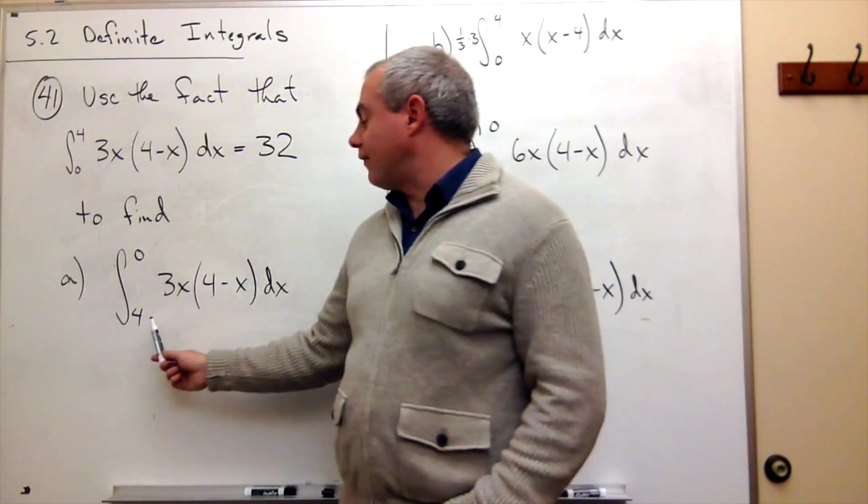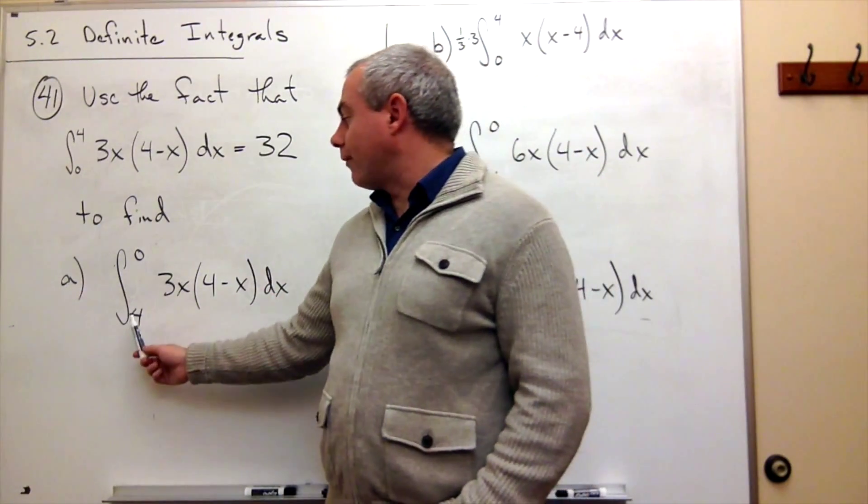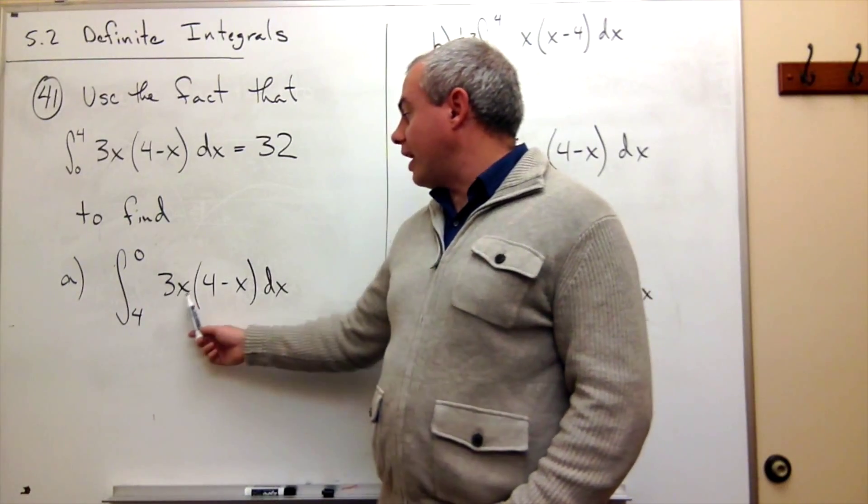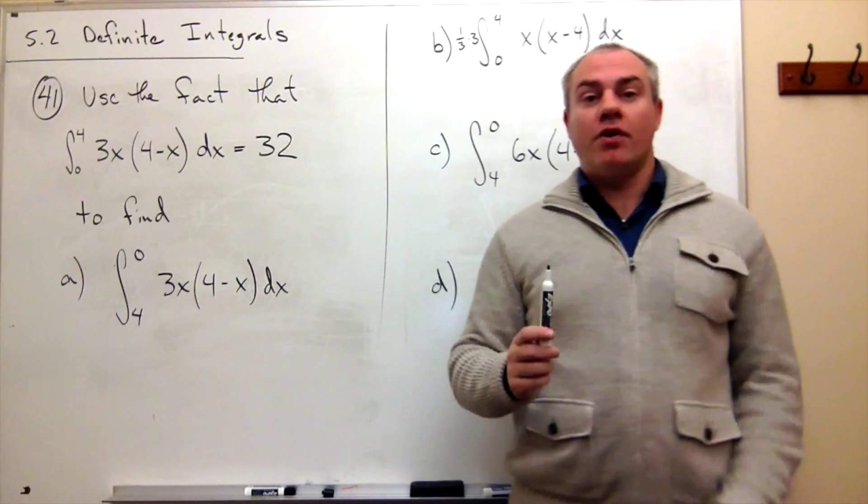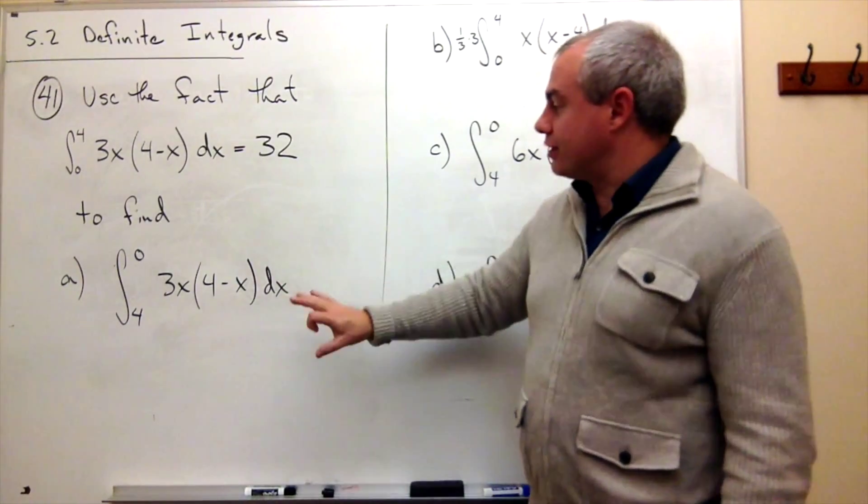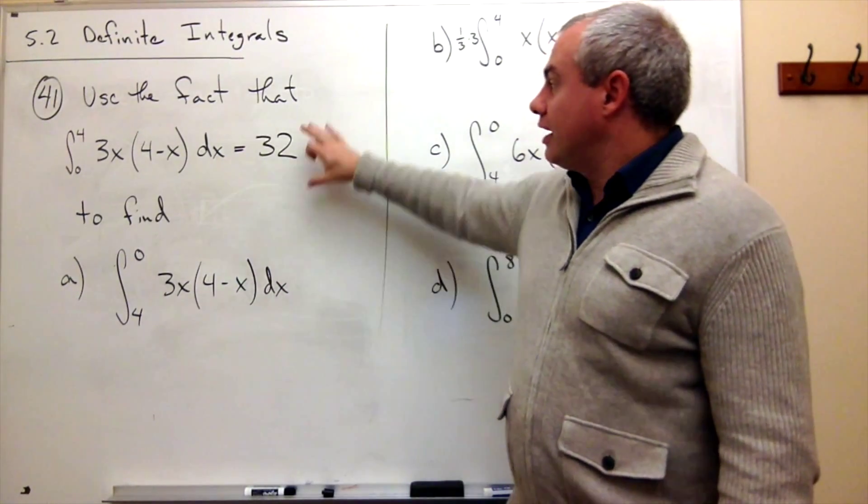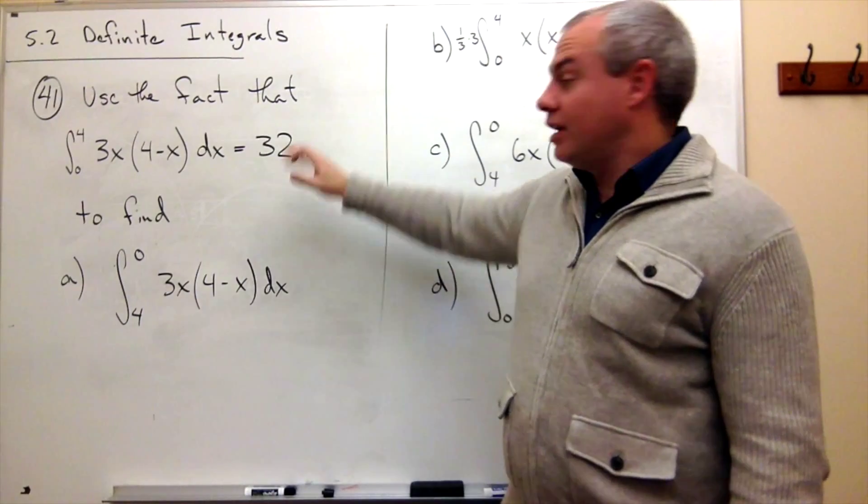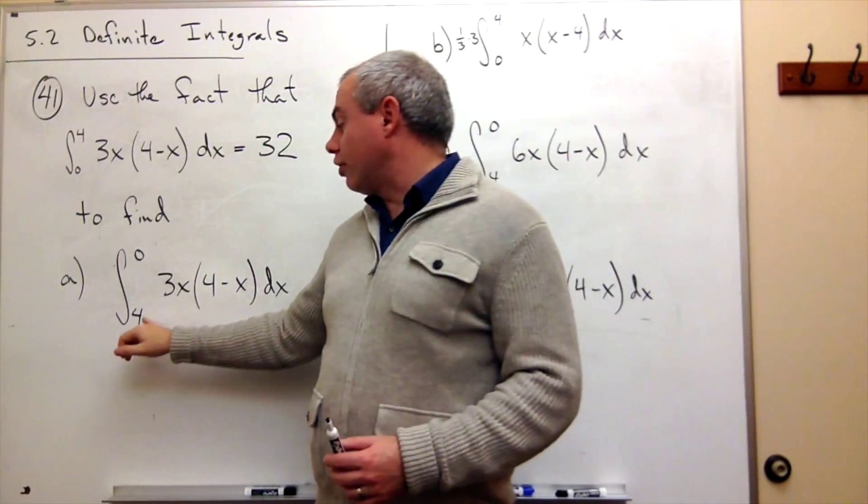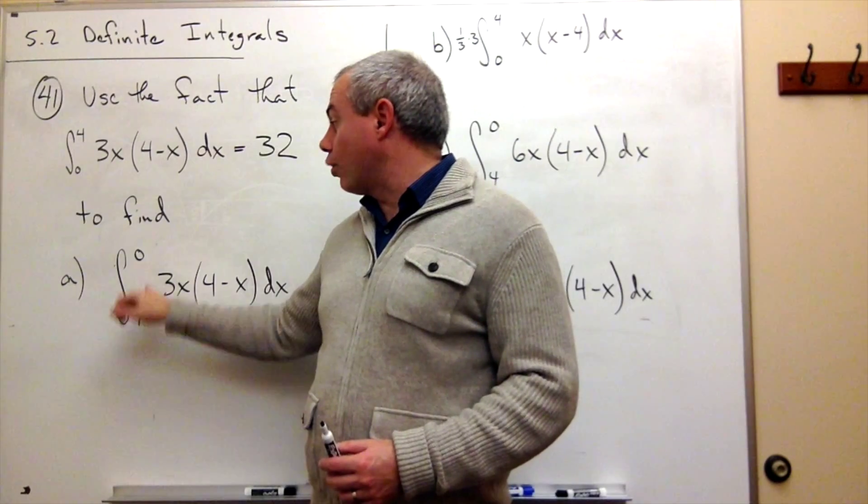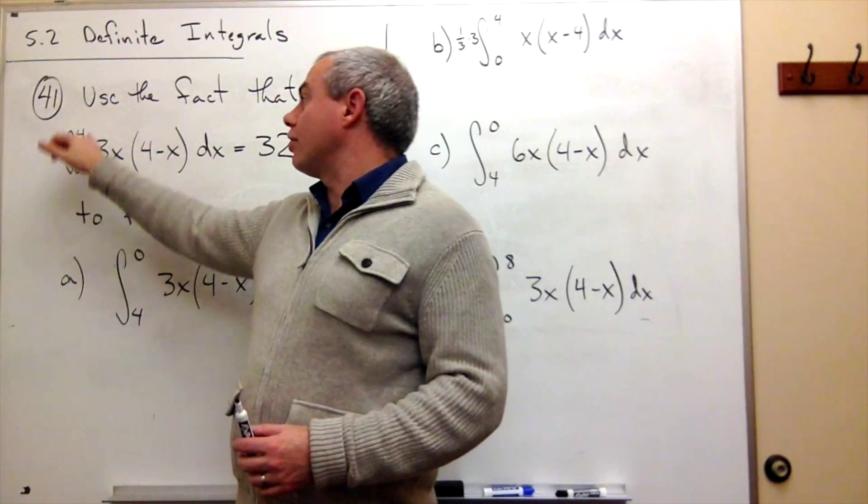The first integral that I'd like to find is the integral from 4 to 0 of 3x times 4 minus x dx, and you'll notice that the only difference really between this integral and the integral that I started with are the limits of integration. On this integral, the limits go from 4 to 0, and on this one from 0 to 4.